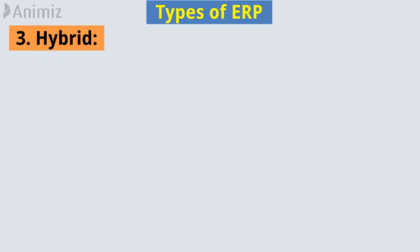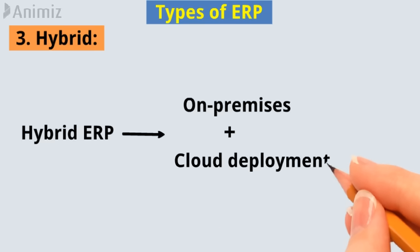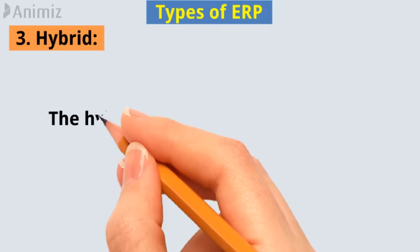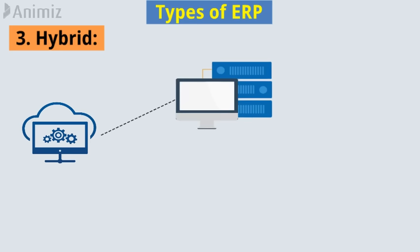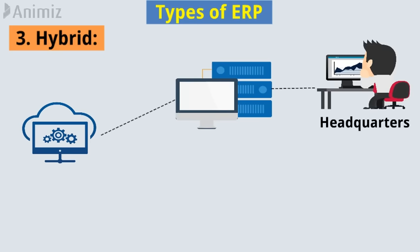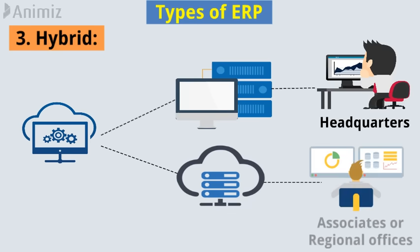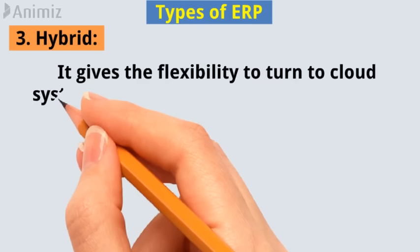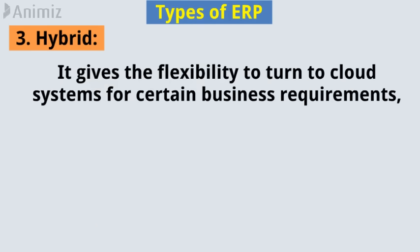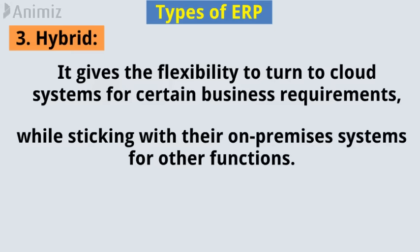Number three: Hybrid ERP. Hybrid ERP merges characteristics of on-premises and cloud deployments. The hybrid system is a two-tier ERP, where a business maintains its on-premises ERP at headquarters but uses cloud systems for associates or regional offices. It gives the flexibility to turn to cloud systems for certain business requirements while sticking with on-premises systems for other functions.